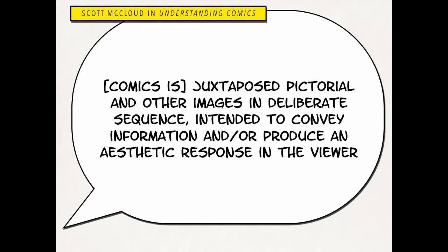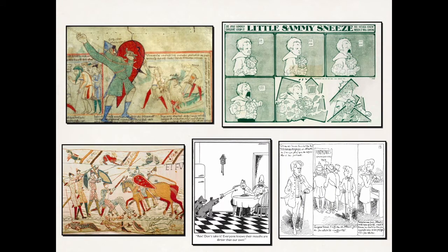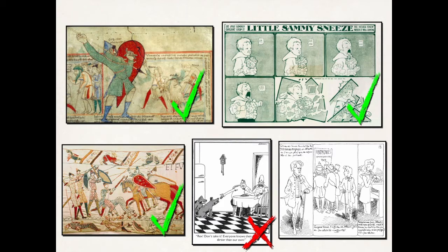Let's break down this definition a little bit. So here are the examples. This medieval manuscript, under Scott McCloud's definition, counts — we've got juxtaposed images. Little Sammy Sneeze by Winsor McKay, again, juxtaposed images. The Bayeux Tapestry — he counts these images as juxtaposed, even though there's not traditionally what we consider panels. Farside? Even though a lot of us think of this as comics, for him it doesn't count. It's a single image, and therefore it is a cartoon and not comics. Rudolf Topfer? His illustrations count, even though there are no word balloons or anything like that.